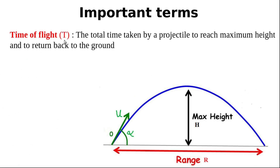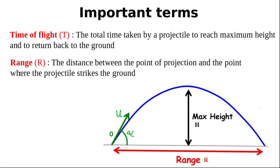The next term is time of flight, capital T. It is the total time taken by a projectile to reach maximum height and to return back to the ground. The particle is projected at this point, reaches maximum height h, then returns back to the ground, so time of flight is the time taken to complete this curved path. The next term is horizontal range, R — it is the distance between the point of projection and the point where the projectile strikes the ground.